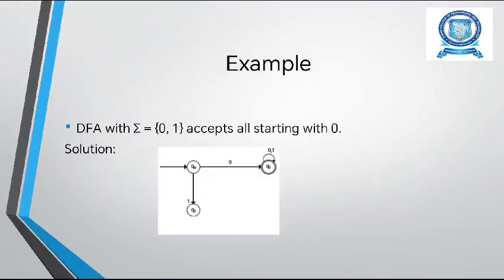Example: DFA with Sigma = {0, 1} that accepts all strings starting with 0. Here we define 3 states: Q0, Q1, and Q2. The starting state is Q0. If the input is 0, it moves to Q1. If the input is 1, it moves to Q2. The final state is Q1.